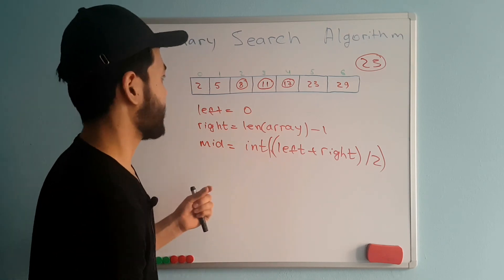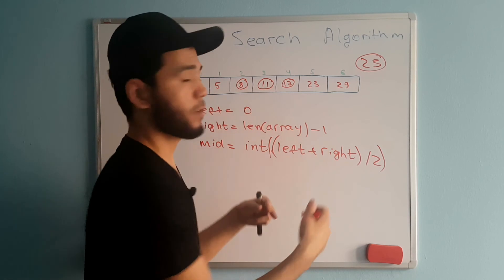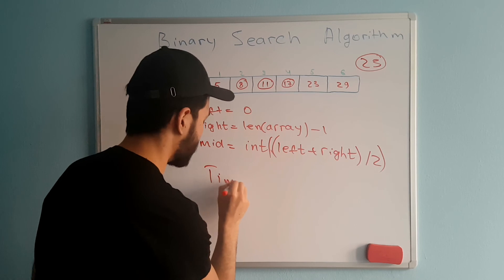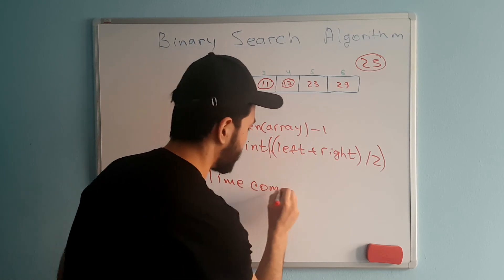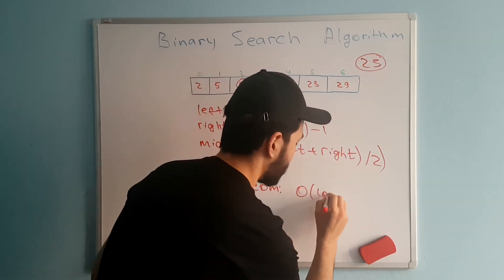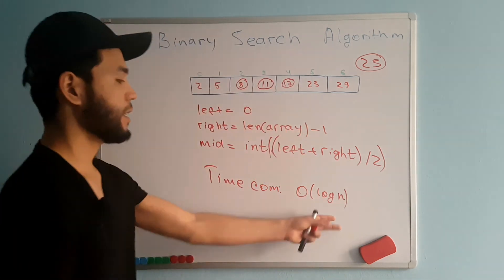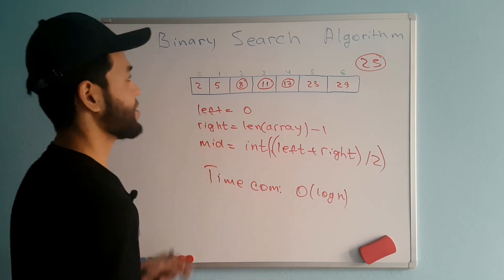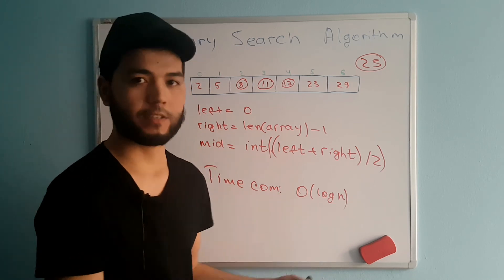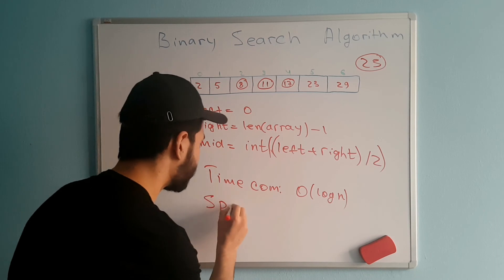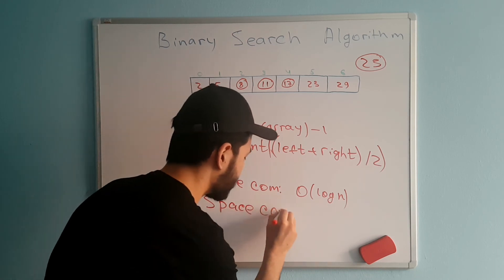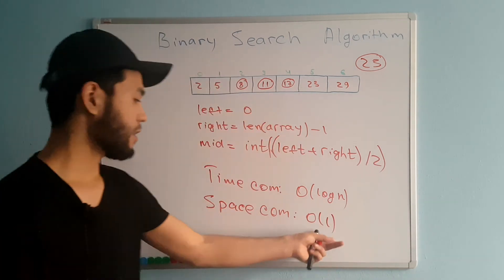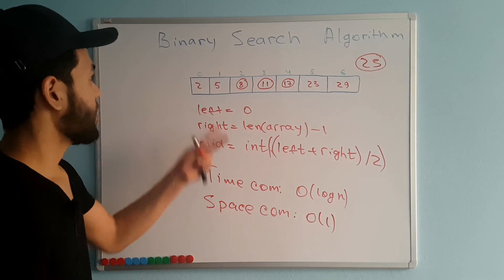For binary search time complexity: since we are dividing the array in half each time, the time complexity is O(log n) — logarithmic. This is better and much faster than linear search. The space complexity is O(1) — constant — same as linear search.